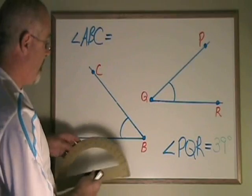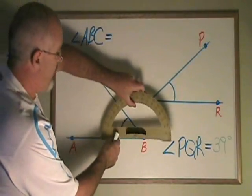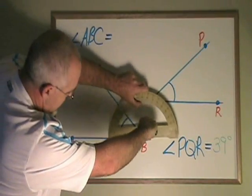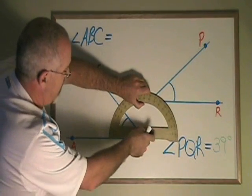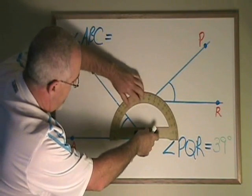Let's measure this angle. Putting the zero dot of the protractor on vertex B, and making sure that the baseline goes across the bottom line that makes up the angle.